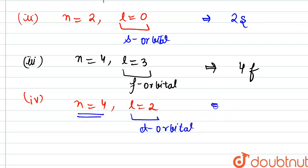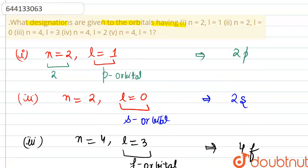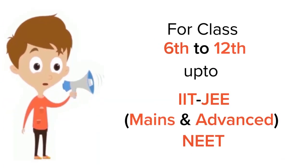The last case that we are provided with is n = 4 and l = 1. So l = 1 means p orbital we are talking about, and n is 4, so it is a 4p orbital designation.